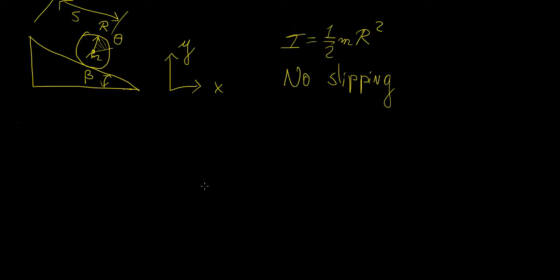Welcome to another video on classical mechanics. In today's video we're going to be talking about a disk of radius r and mass m rolling down an inclined plane. The angle of the incline is beta, and there are two types of motion this disk is undergoing as it rolls freely on that surface.